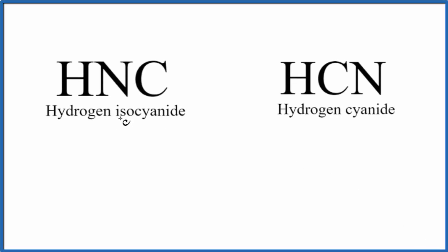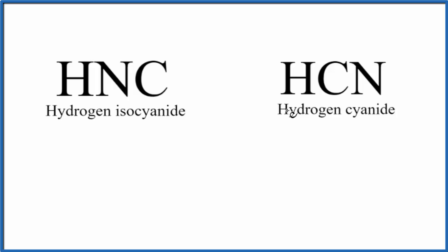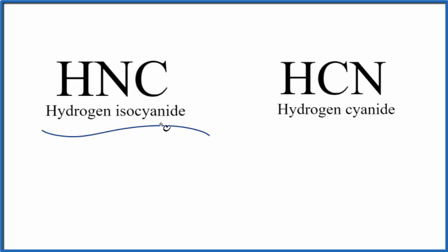In this video we're going to draw the Lewis structure for HNC, hydrogen isocyanide, and we'll also look at HCN, hydrogen cyanide. These two compounds can change back and forth — usually on Earth we have HCN, but where it's cold in outer space, interstellar space, HNC is quite common. So it's an important compound if you're studying outer space.